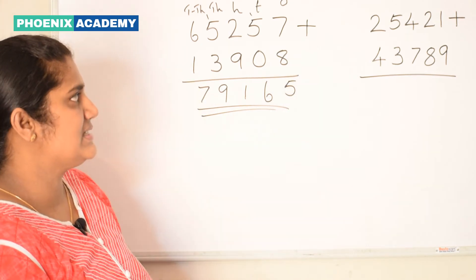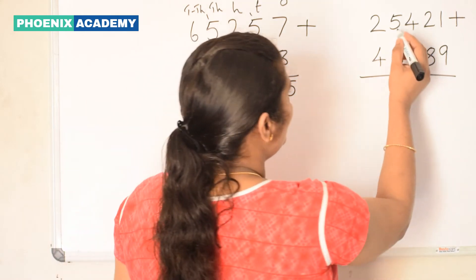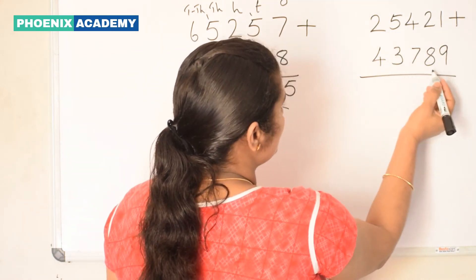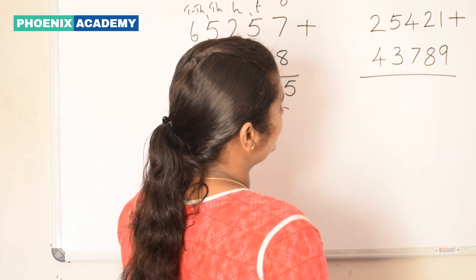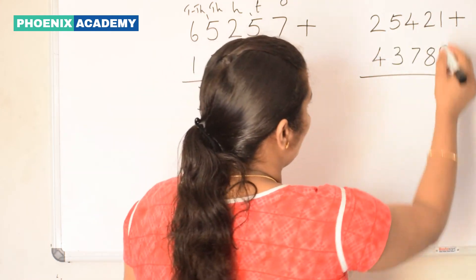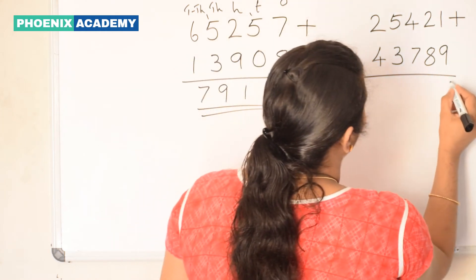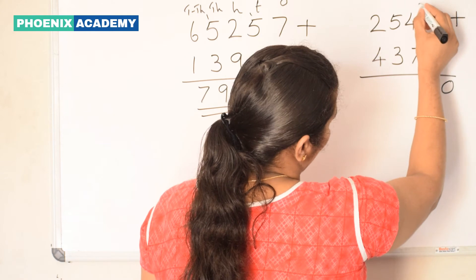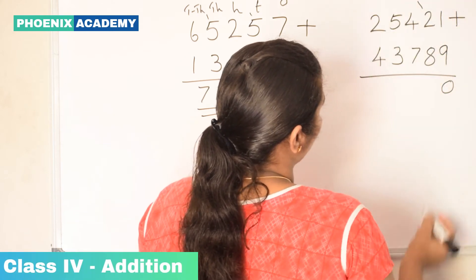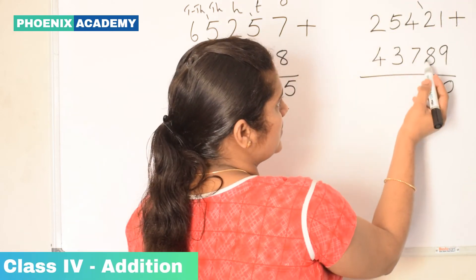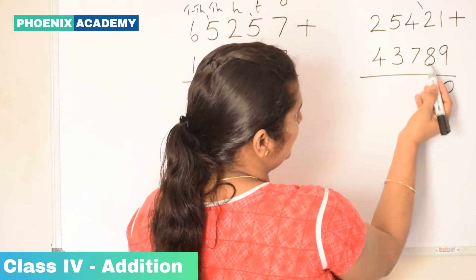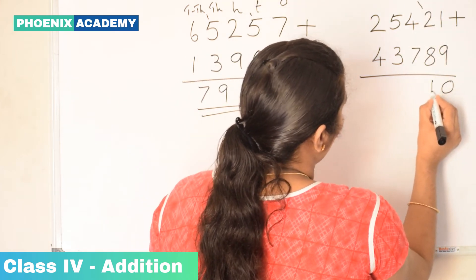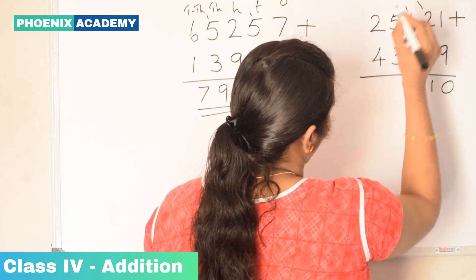Let's look at this example also: 25,421 plus 43,789. Let's start from the ones: 1 plus 9 is 10. We write 0 here and 1 is carry-forwarded to the tens place. Let's add the tens values: 2 plus 8 is 10, plus 1 carry is 11. We write 1 here and 1 is carry-forwarded.